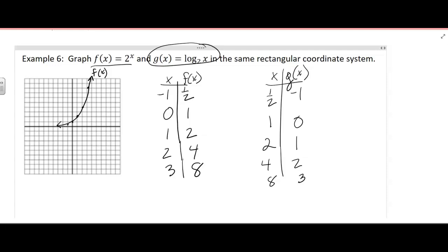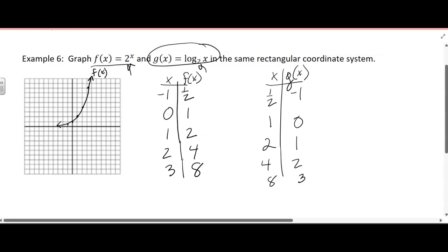Okay, so we graphed the exponential function, but the logarithm function, and we can say this because the base is the same. So we can say they're inverses of each other, and we get these table of values over here for g of x.